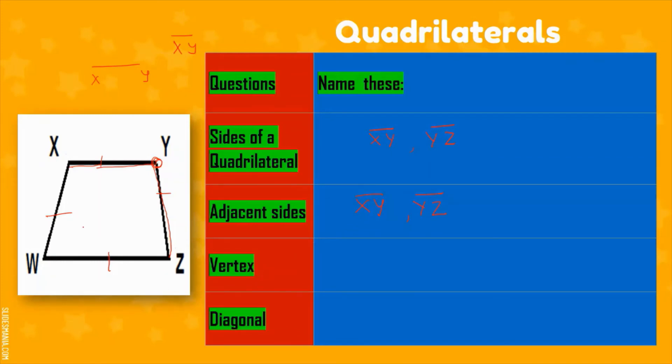Now we talk of a vertex. Can you name a vertex here? Yes, you're right. Where two sides meet or intersect each other, that is a vertex point. So I have a vertex, that is X. Can you name three more?